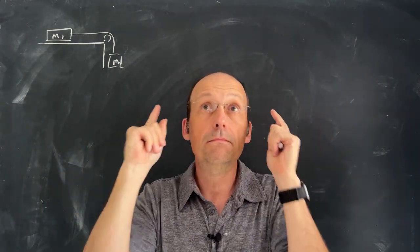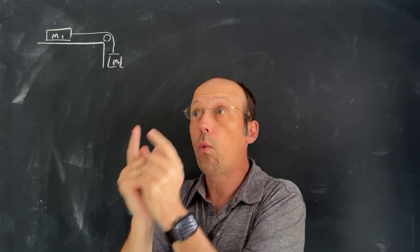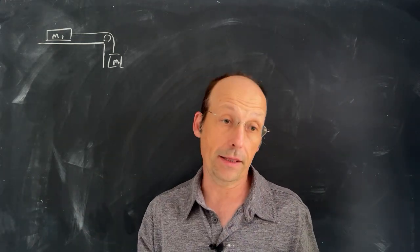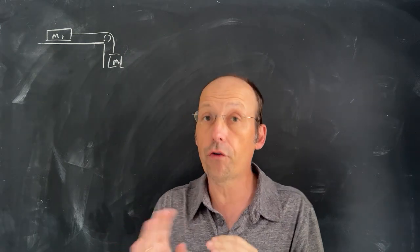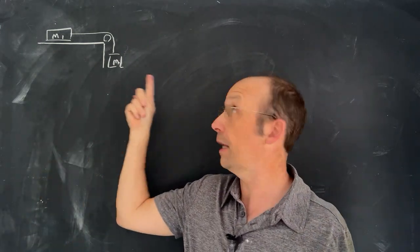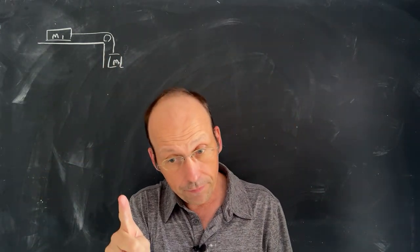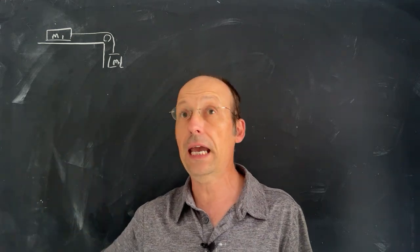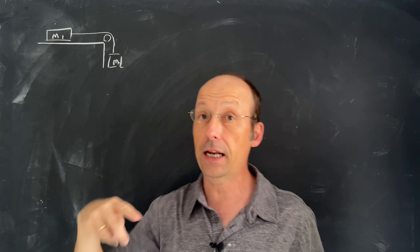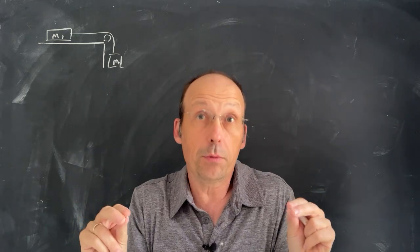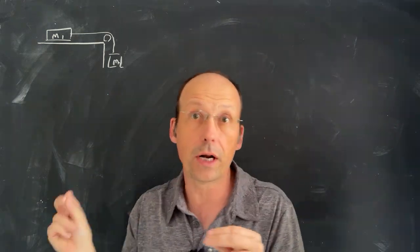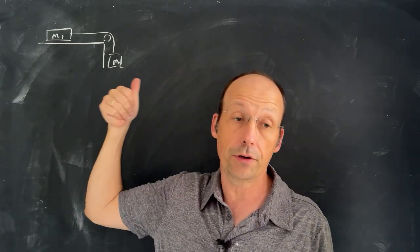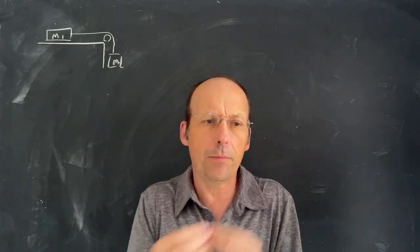But what if we want to find the force of constraint? Then we need a new method, and I'm going to go over that method using this problem right here — a half Atwood machine. What's useful is to first solve it with Newtonian mechanics and then with Lagrangian mechanics, so we know exactly what the solution is. This is a simple problem; you can do it either way.